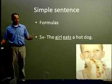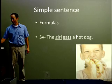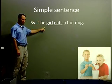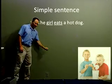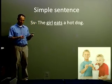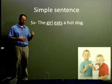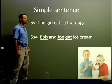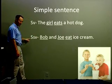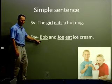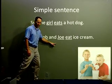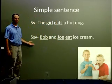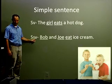The girl is the subject, eats is the verb. We had SV — the girl eats a hot dog. Now, in this picture down here, we have two boys, and they're both doing the same action of eating ice cream. Here I have SSV: subject Bob, subject Joe, verb eat. So we have 'Bob and Joe eat ice cream.' That would be SSV.